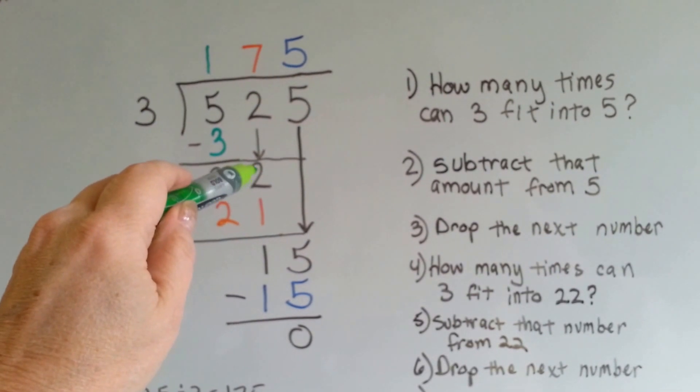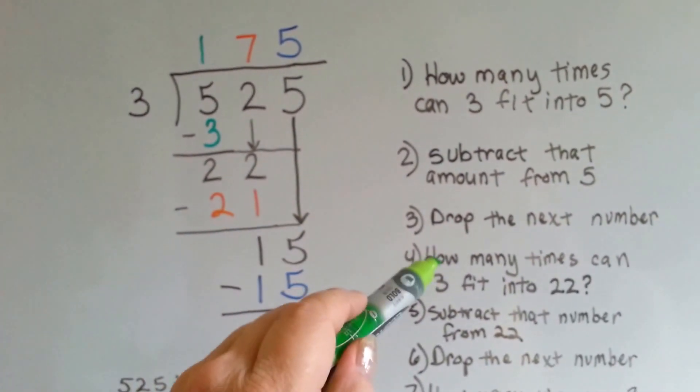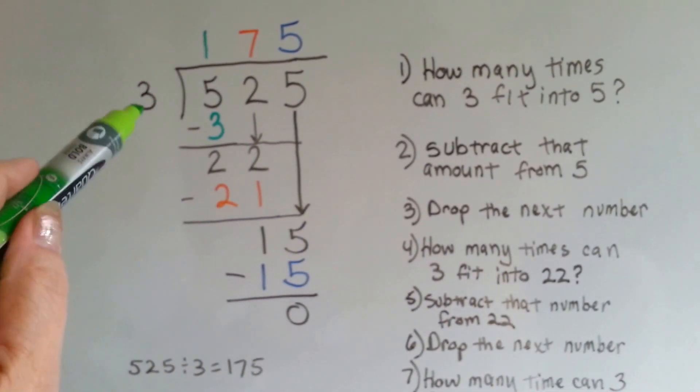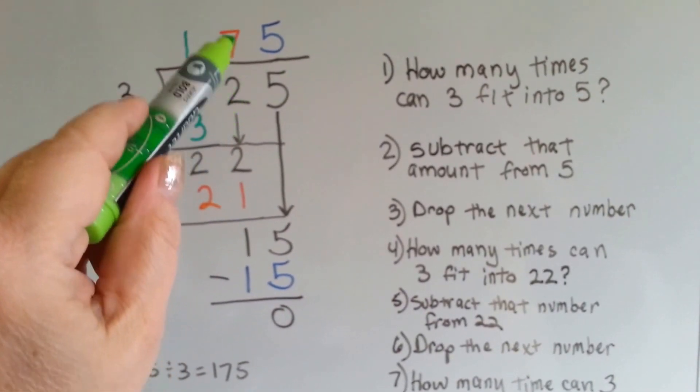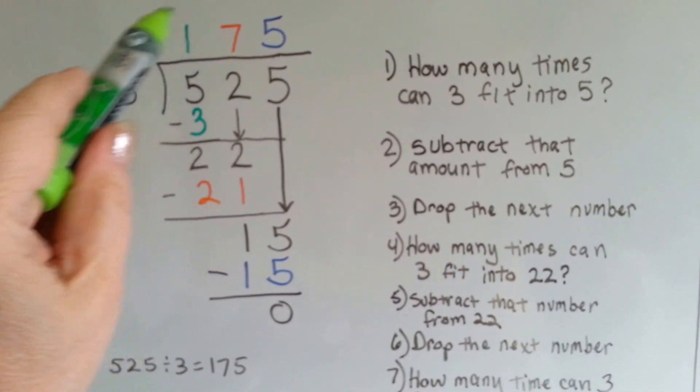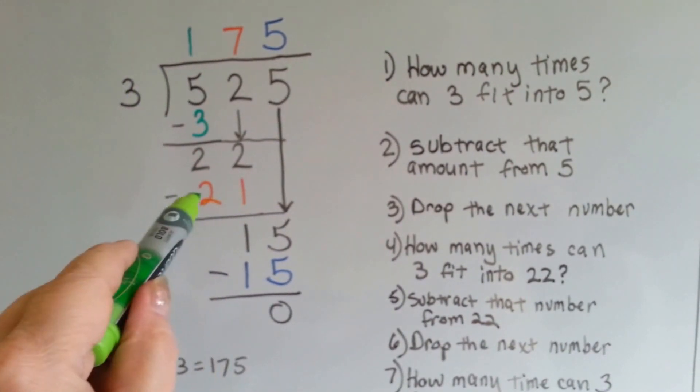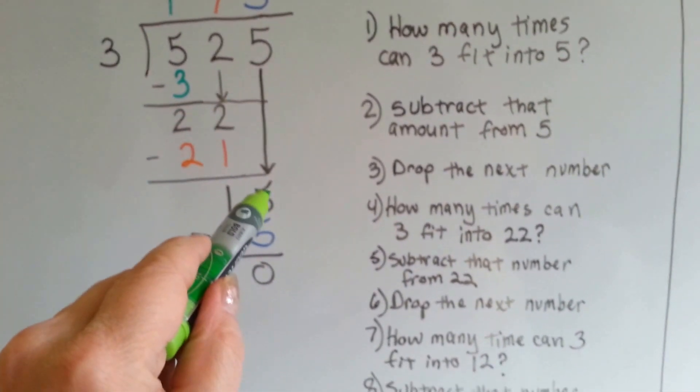Now it's the 2's turn to come down, and we ask ourselves, how many times can 3 fit into 22? 3 times 7 is 21. So we put the 7 above the 2 that we drop down. We do our multiplication of 3 times 7. We write our 21 here. We do our subtraction, and now it's the 5's turn to drop down.